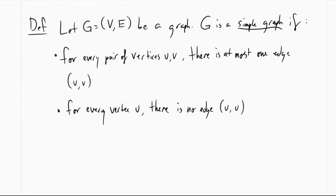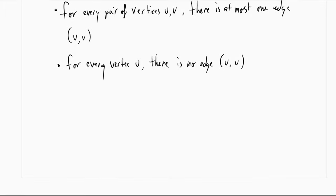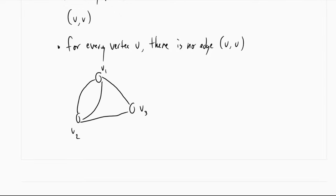So we can actually start classifying different types of graphs. We can say that if we're given a graph G with vertex set V and edge set E, we can call G a simple graph if for every pair of vertices u and v, there is at most one edge uv. And for every vertex u, there is no edge uu. So in other words, we're not going to have any sort of duplicate lines between any pair of vertices, and we're not going to have any loops going from one vertex to itself. So we can take this graph as an example. And we can note that there are two edges going between v1 and v2. So because of this, this graph is not simple.